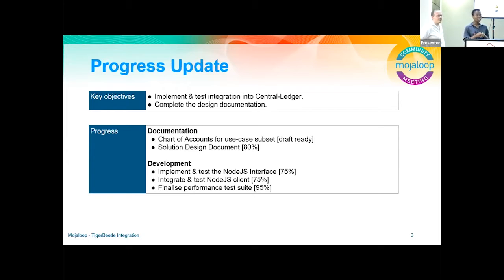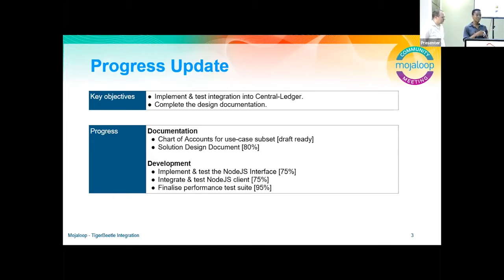Our key objectives were to complete the implementation and testing of fully integrating Tiger Beetle into the Central Ledger. We also wanted to complete some design docs that would document what the solution is — a good talking point about whether we're approaching it in a way that makes sense, and whether there are things we want to change. Input and review from the community on those docs will be really wonderful.